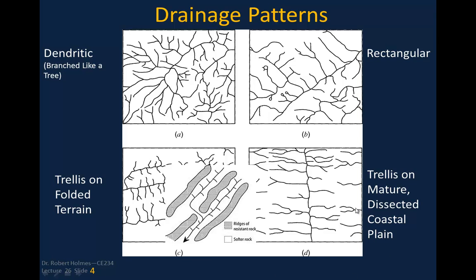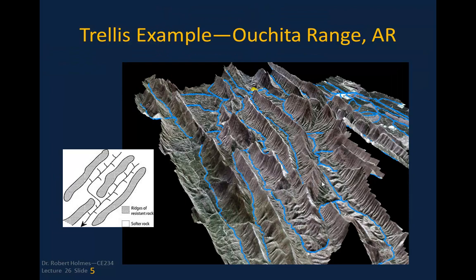On the lower right, we've got a trellis pattern on mature, dissected coastal plains, which you'd see in the Piedmont area of the eastern United States. This is an example of the trellis in the Ouachita Range in Arkansas — you've got these folded, uplifted segments with streams forming in the middle and drainages coming off the sides in a trellis pattern.